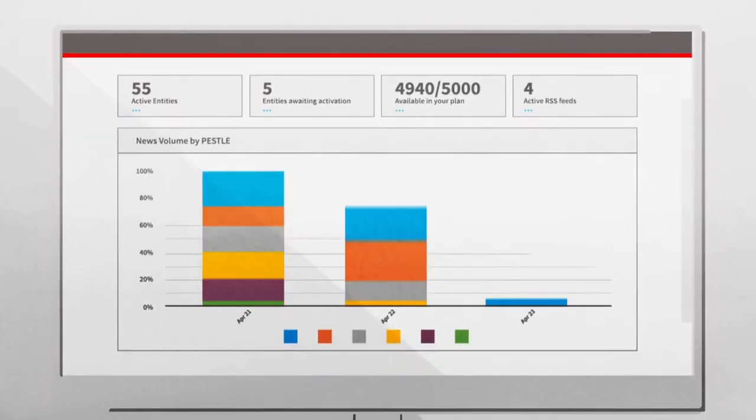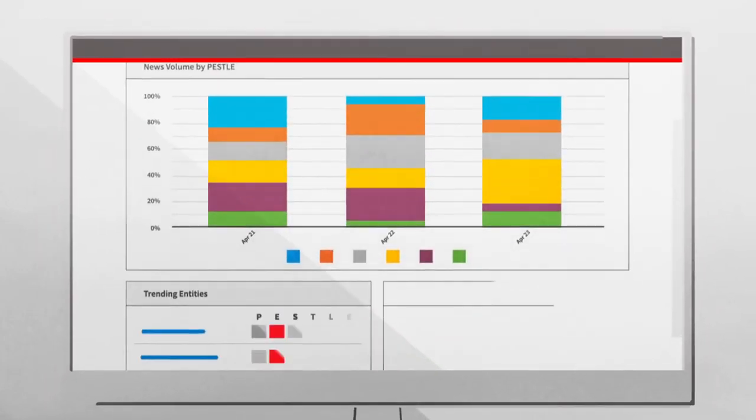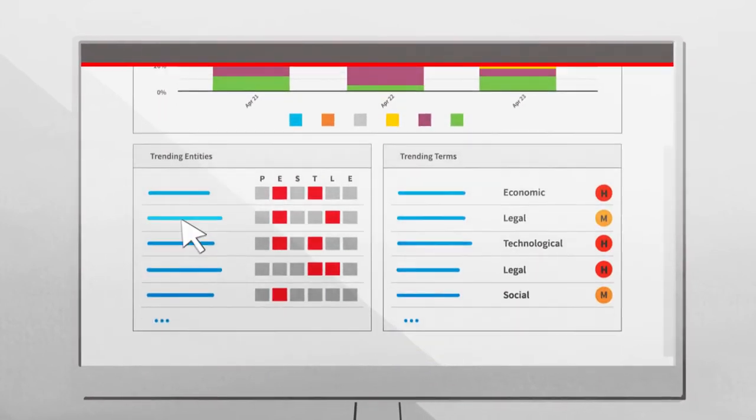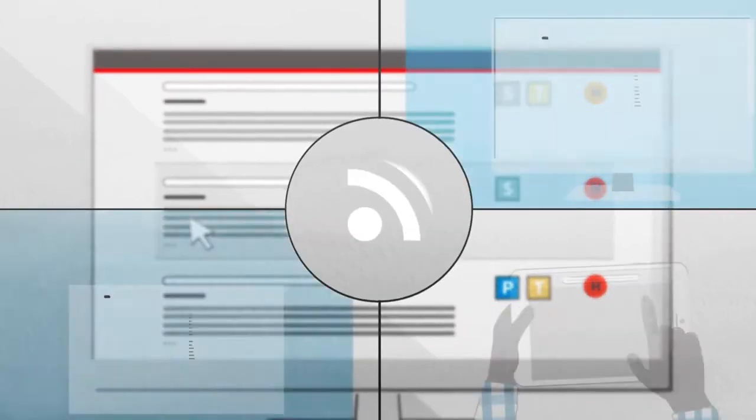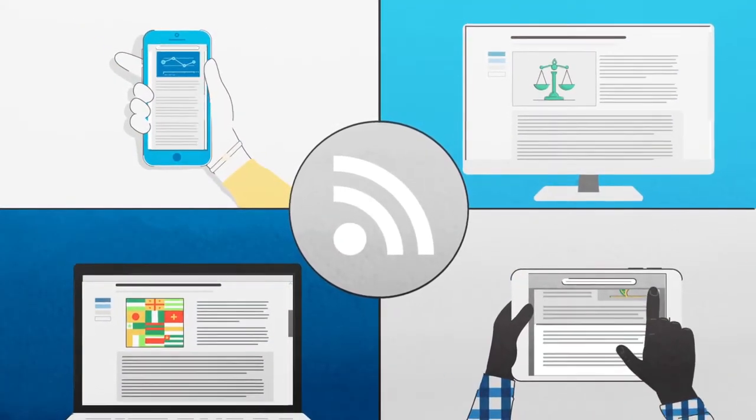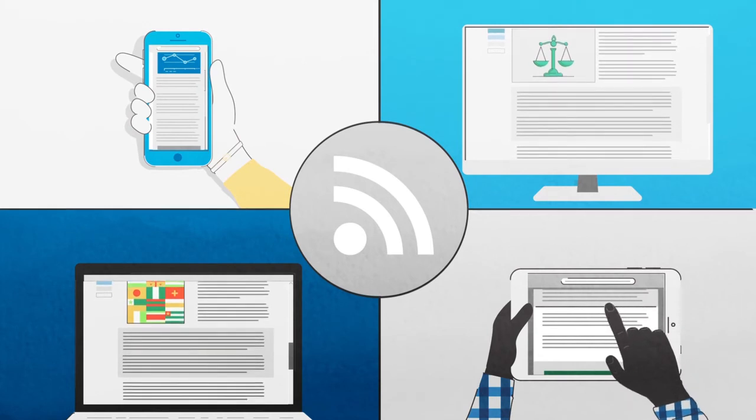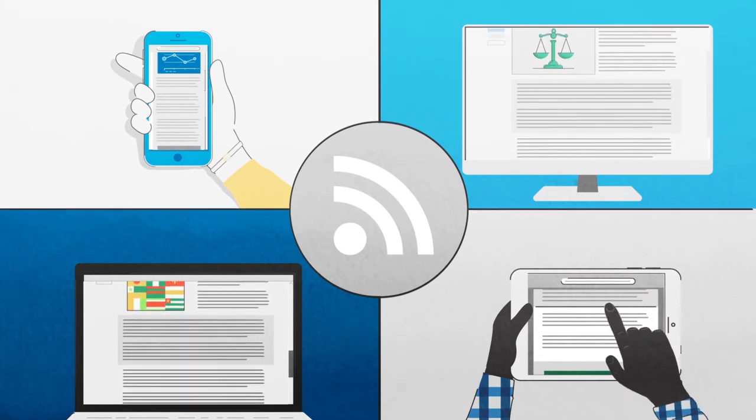From the dashboard, users can review a snapshot of risk levels, trending risk areas, and drill down for specific risk profiles. The RSS feeds can be viewed individually or integrated with key business systems, allowing users to read adverse news tied to each feed in real time.